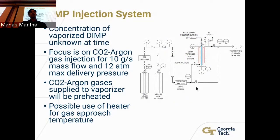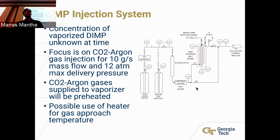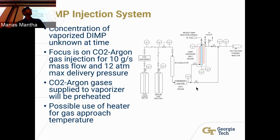The DIMP injection system will also be tested first with carbon dioxide, argon, and air — it's just the system name, since eventually it will carry DIMP. We can't test with DIMP right now because the vaporized DIMP concentration is unknown and the cost is uncertain. Our current focus is to use CO₂ and argon to achieve a gas injection of around 10 grams per second of mass flow rate, with a maximum delivery pressure of around 12 bar. These gases will be supplied to the vaporizer and preheated.